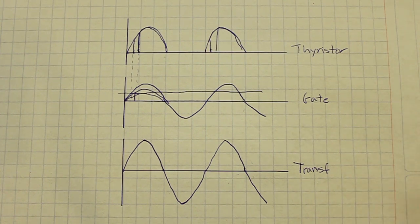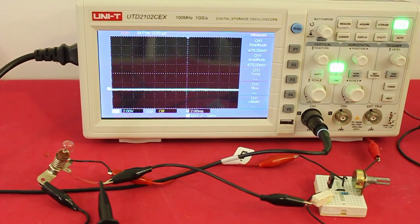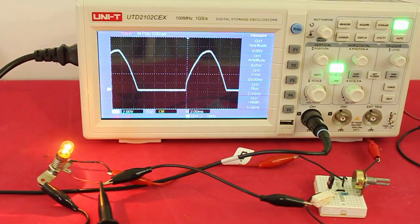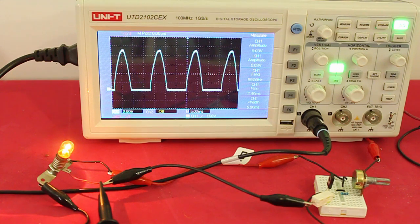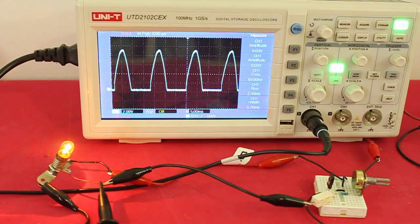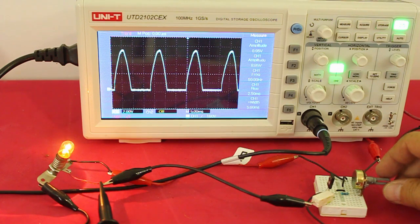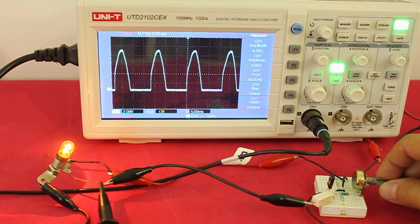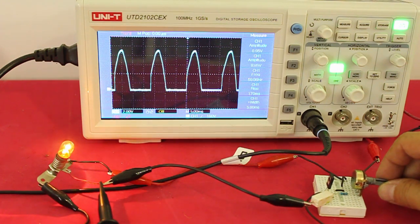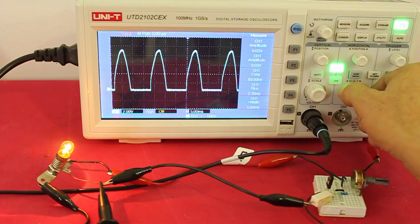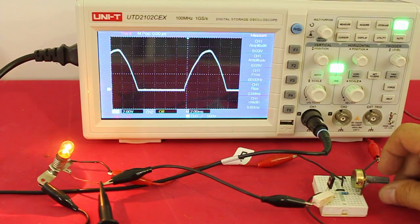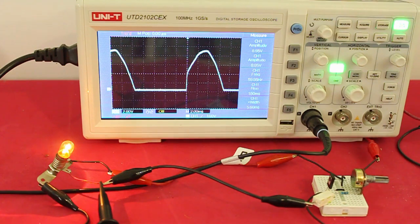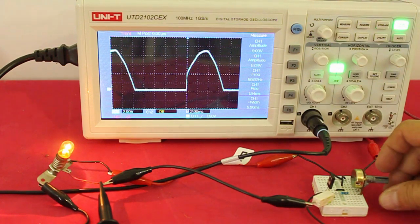Let's see this more clearly in the oscilloscope. I'm going to connect the transformer. Here we can see the output of the thyristor. We are measuring at the terminals of the lamp. The resistance is at a minimum, and now if we increase the resistance by moving the potentiometer, we can see how the output is modified. Minimum resistance, the half cycle is almost complete. We increase the resistance and we can see how we lose part of the semi-cycle.